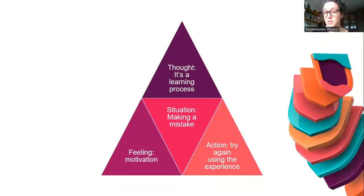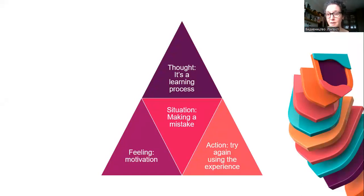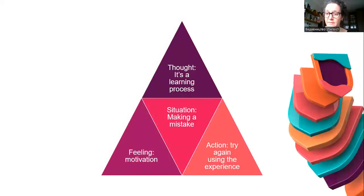You can actually try this exercise yourself. Make a triangle and think of a situation and a thought you have about yourself in that situation. For example, the situation is: the world is changing and requires new teaching methods. The thought might be: 'I'm too old to learn new methodology.' The feeling: not motivated, stressed. The action: keep teaching the same way. But if we change the thought to 'I have to adapt to this world,' then we feel motivated and create a new action plan.